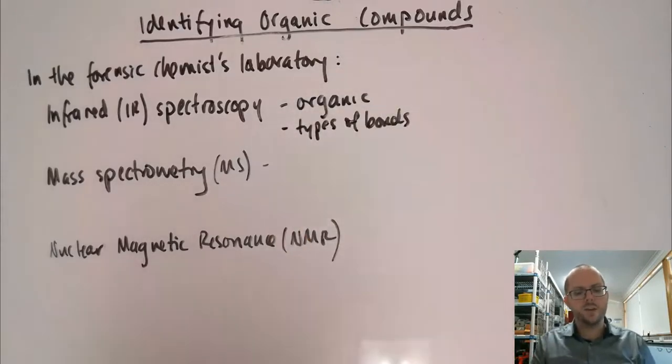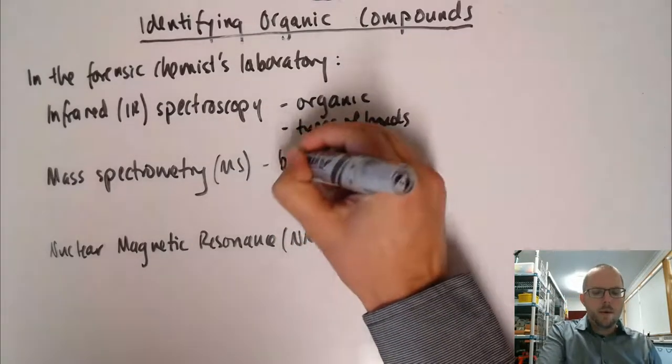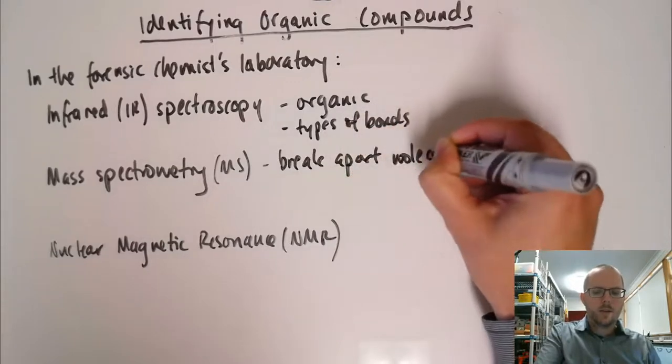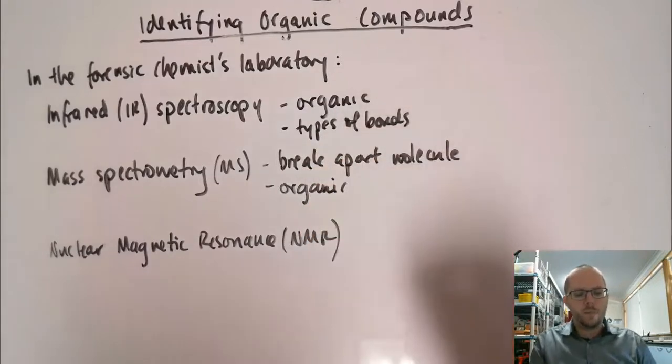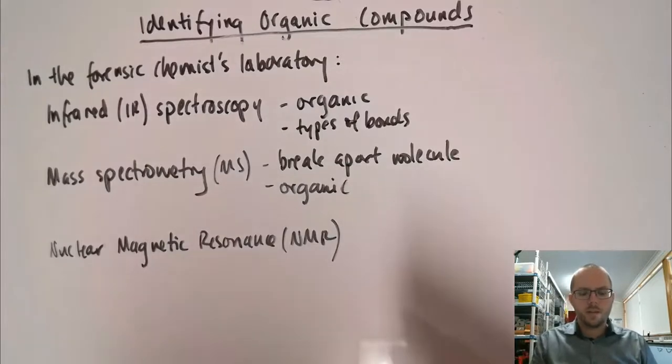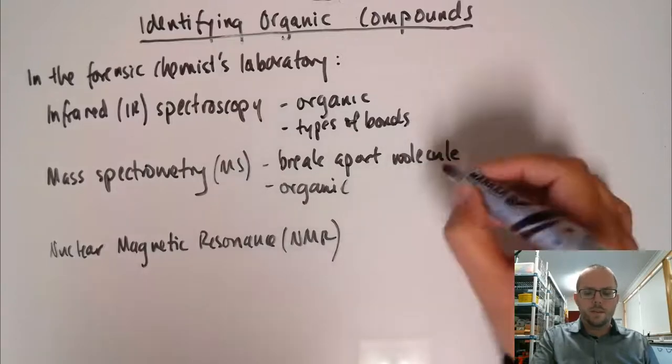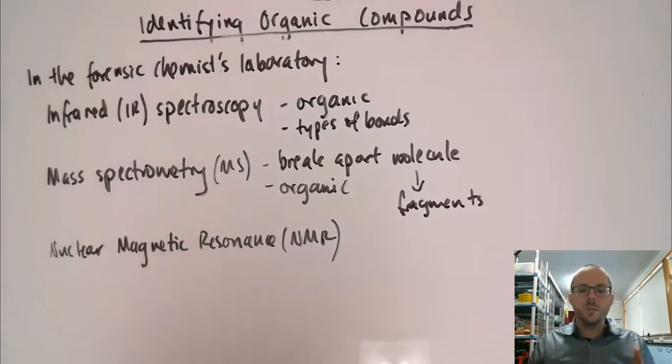Mass spectrometry. We're going to look at a lot more detail a little bit later in the topic. So I'll only give you a brief overview. Basically we break apart the molecule. We're talking about organic substances here again. Actually all of these ones are more applicable to organic substances because we've got other techniques for inorganic ones that would be useful. So we break apart the molecule and we're looking at the fragments. Once we smash it apart, what fragments does it break into, which is characteristic of its structure.